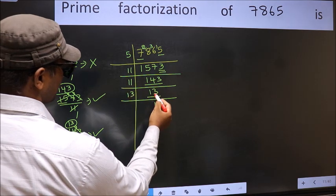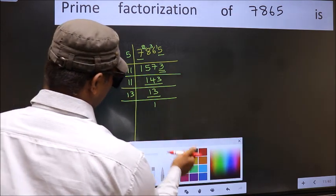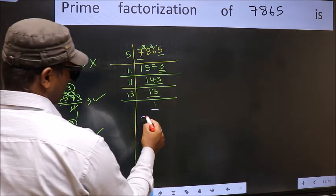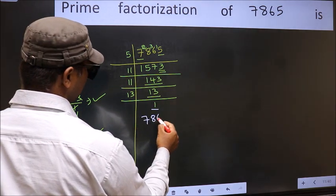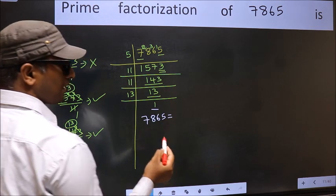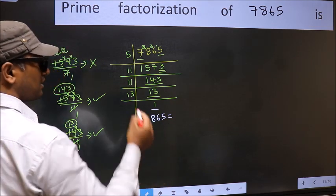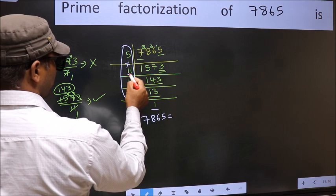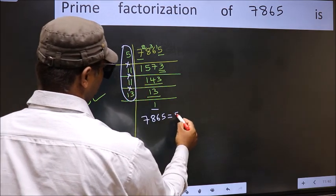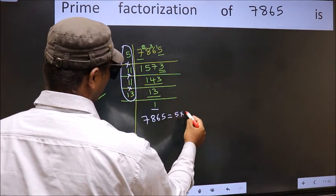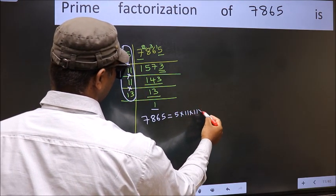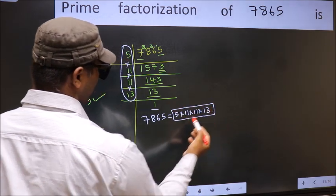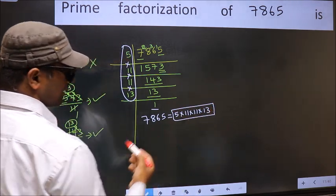Now we have 13. 13 is a prime number, so 13 once is 13, giving us 1. So the prime factorization of 7865 is the product of these numbers: 5 × 11 × 11 × 13. This is the prime factorization of 7865.